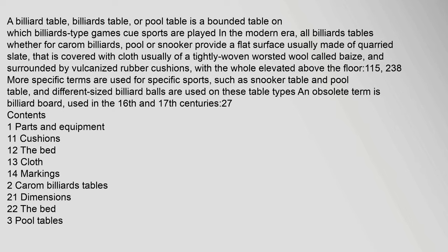A billiard table, or pool table, is a bounded table on which billiards-type games — cue sports — are played in the modern era. All billiards tables, whether for carom billiards, pool, or snooker, provide a flat surface usually made of quarried slate, that is covered with cloth — usually a tightly woven worsted wool called baize — and surrounded by vulcanized rubber cushions, with the whole elevated above the floor.